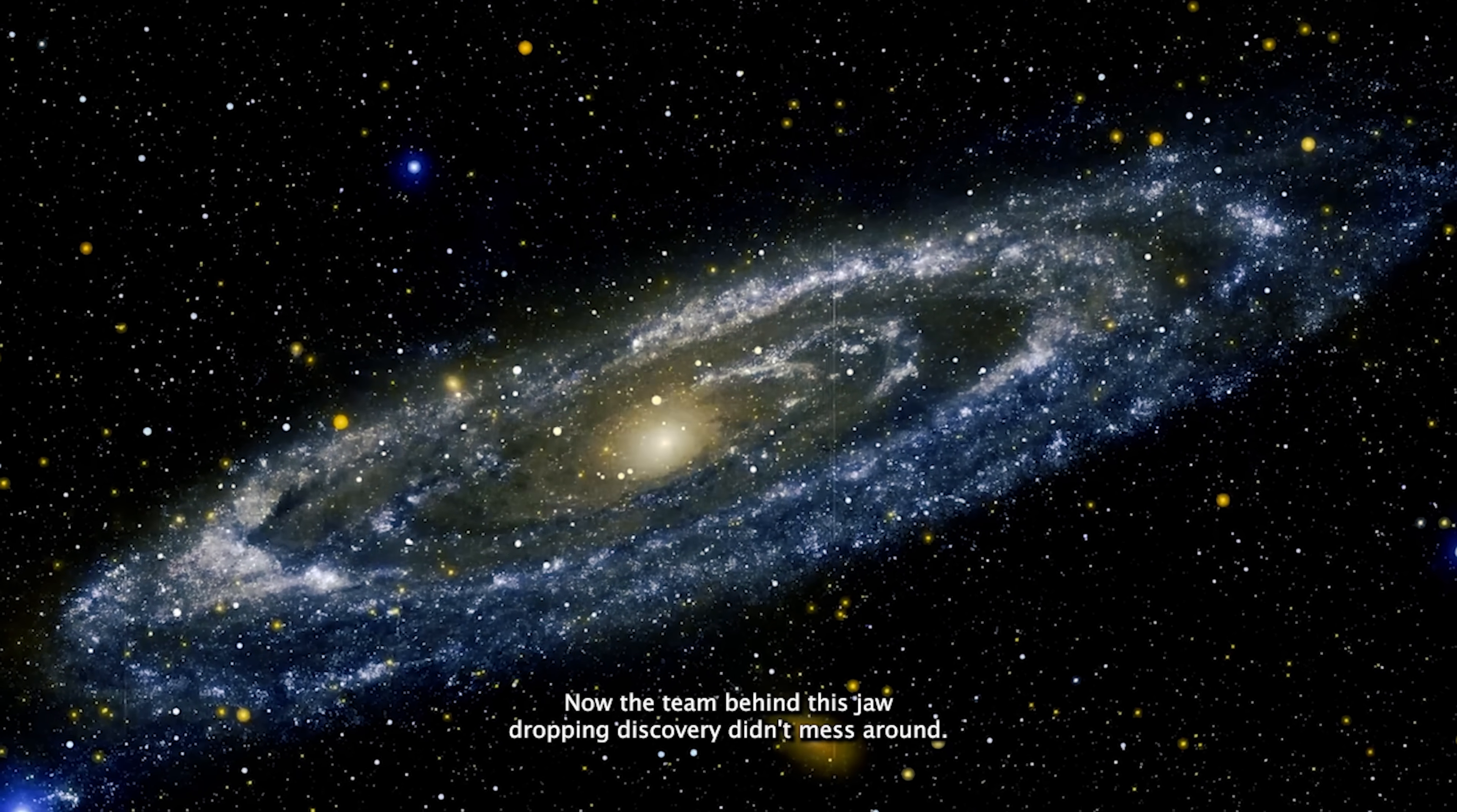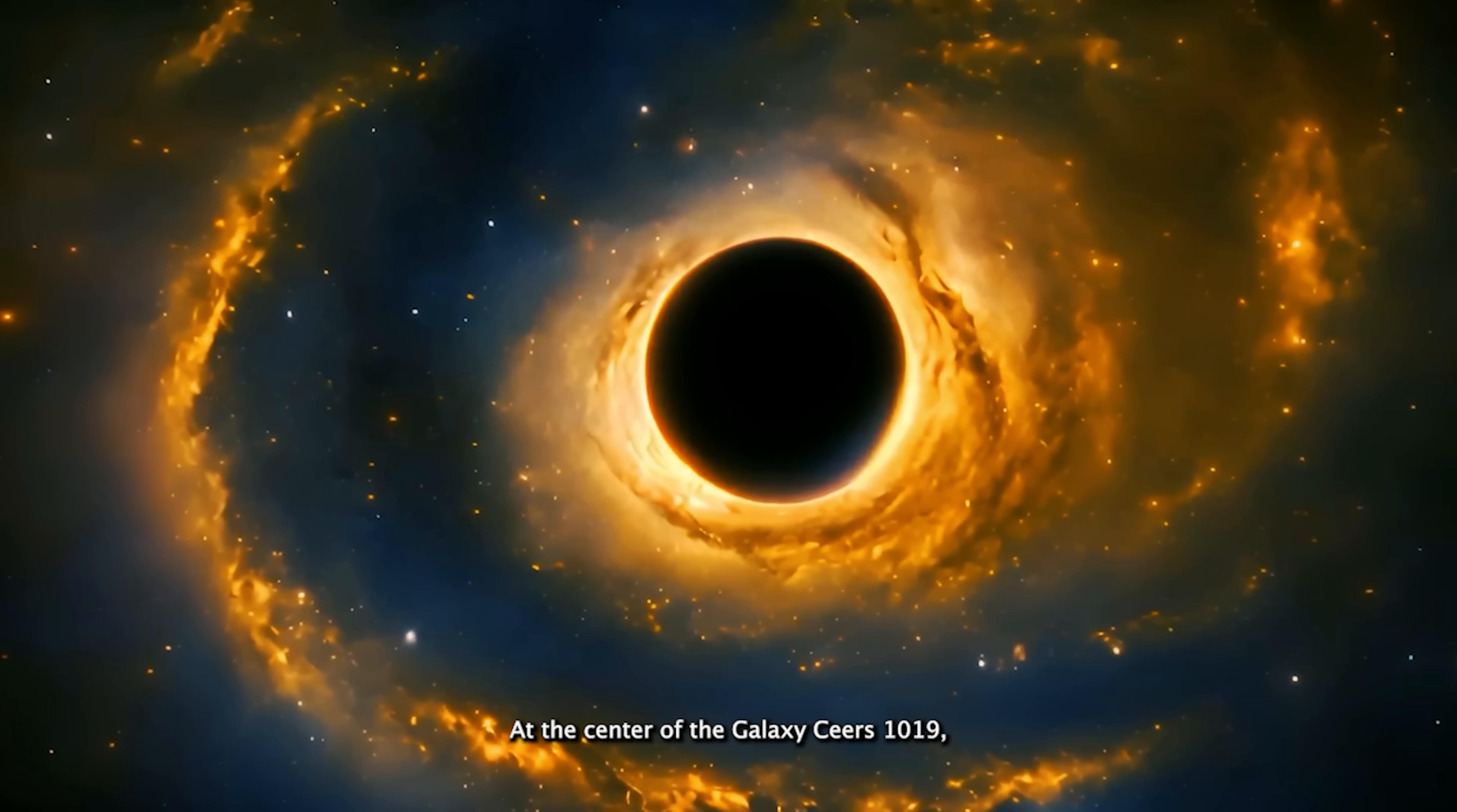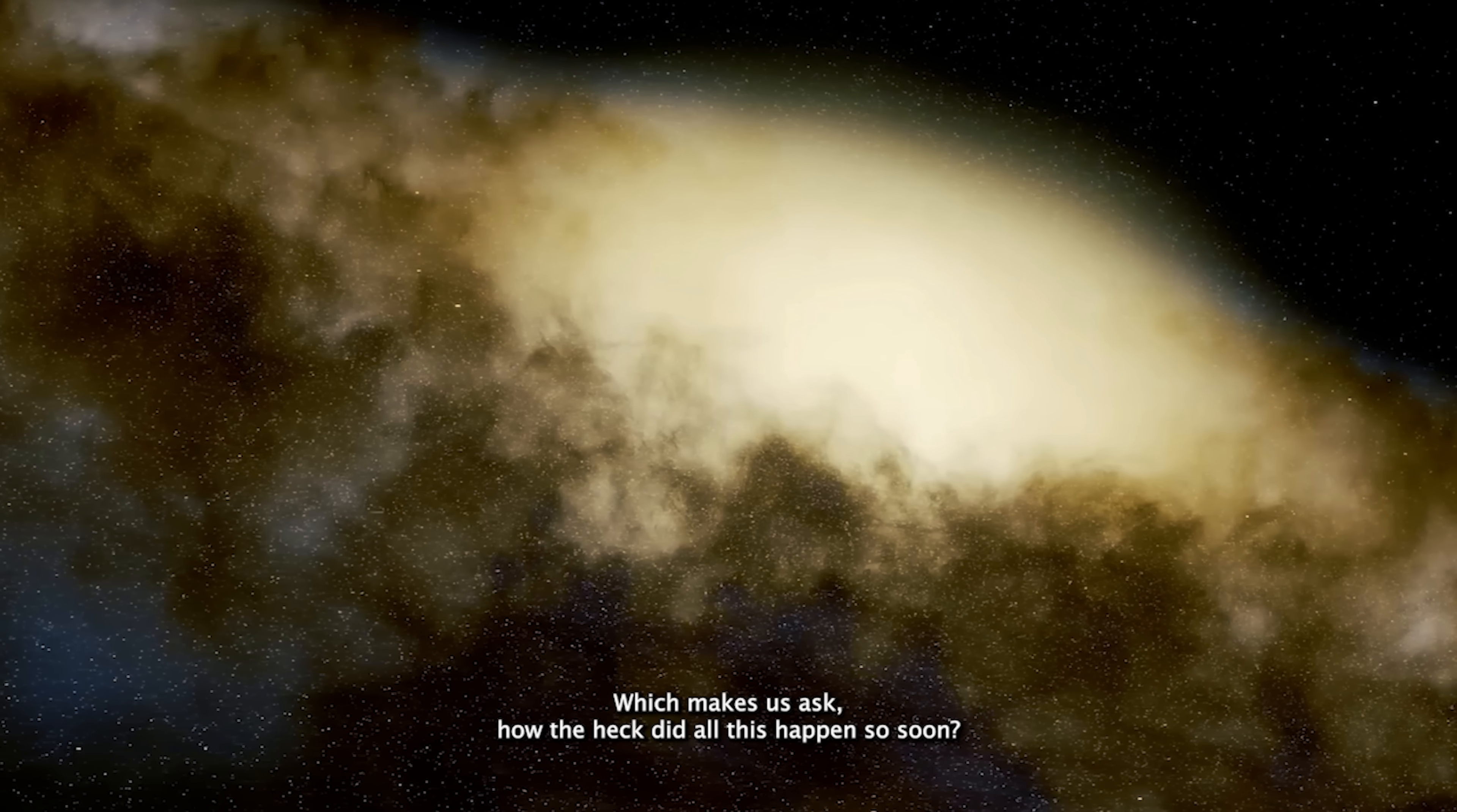Now, the team behind this jaw-dropping discovery didn't mess around. They brought out the big guns, all four of the brand new instruments on the Webb telescope. One hour. That's all it took for Webb to peek into the deep past and say, um, guys, we've got a problem. At the center of the galaxy Sears 1019, it found what can only be described as a cosmic heavyweight champ, a supermassive black hole with the mass of 10 million suns. And this wasn't some sleepy little space town either. This galaxy was busy. Stars were forming, the galactic core was active, and things were popping off. Which makes us ask, how the heck did all this happen so soon?